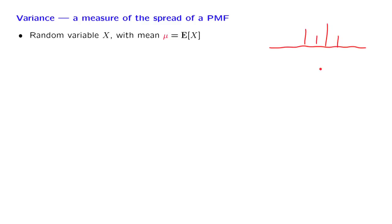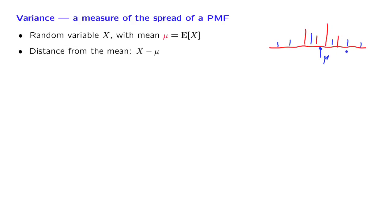Consider another random variable that happens to have the same mean, but its distribution is more spread out. Both random variables have the same mean, which we denote by mu. However, the second PMF, the blue PMF, has typical outcomes that tend to have a larger distance from the mean.